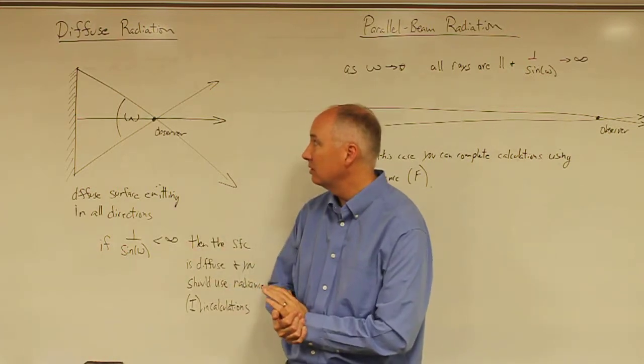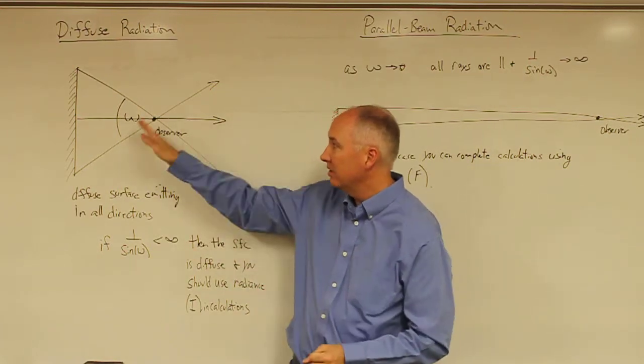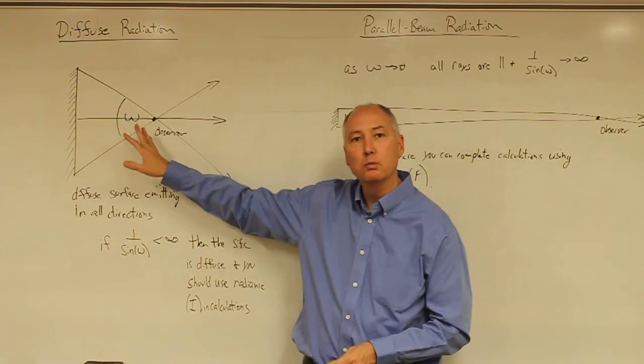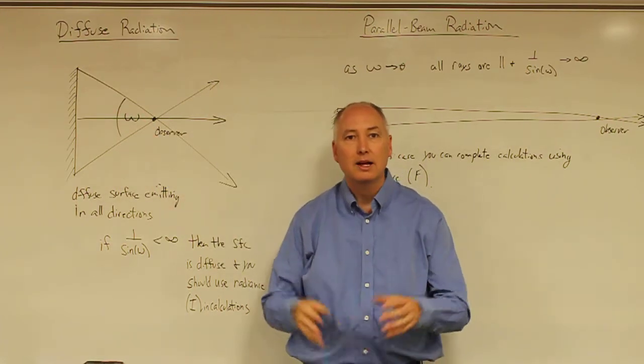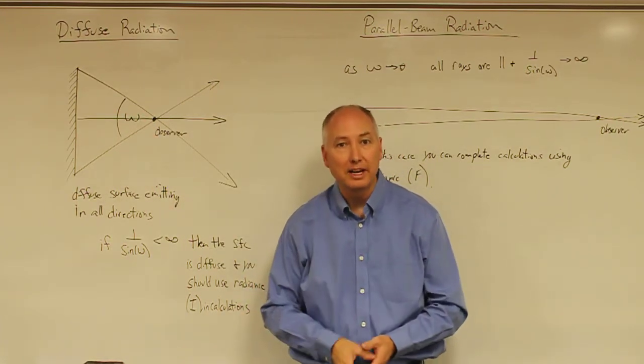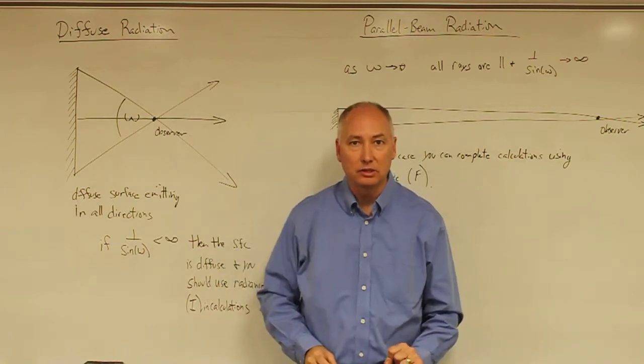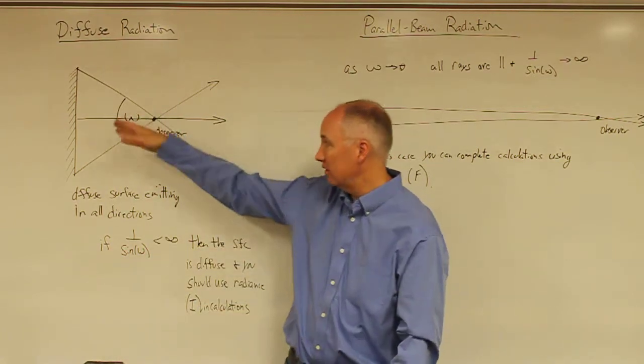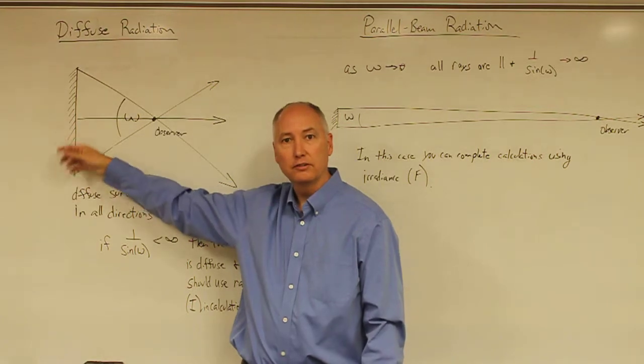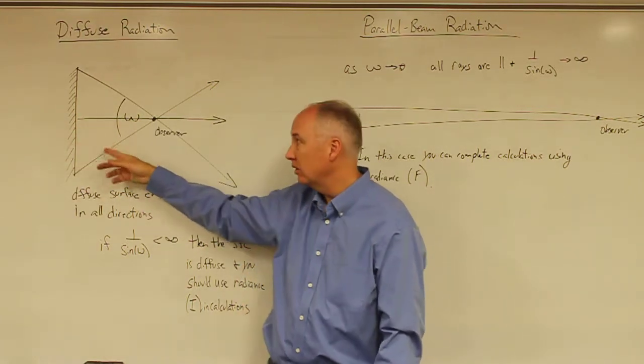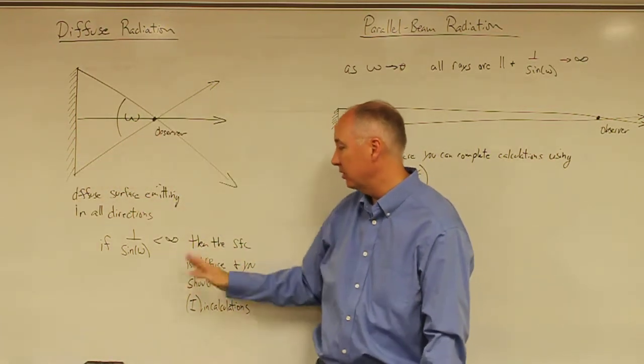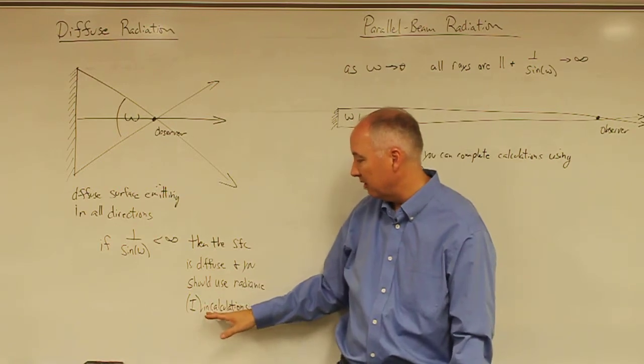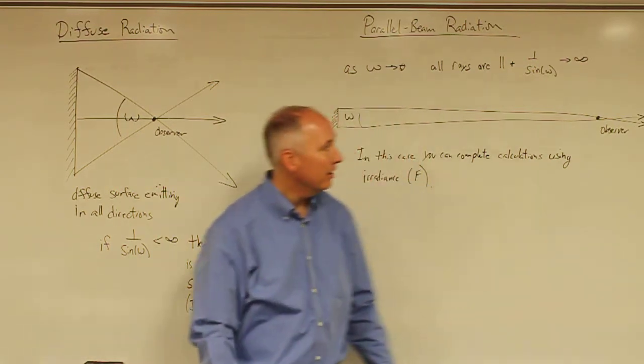So one of the things that we want to focus in on is this situation is most appropriate for satellites that are orbiting our planet and looking down at the Earth's surface. They're very close to the Earth, and the Earth subtends a very large solid angle, and you generally have to do your calculations in terms of the radiance.